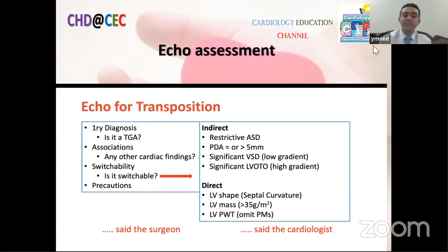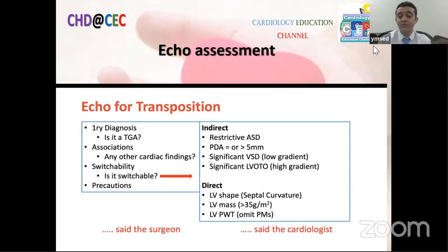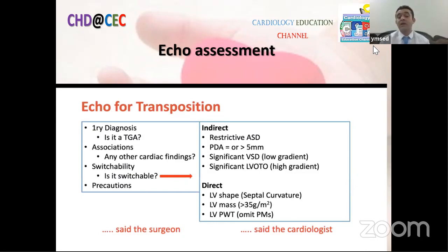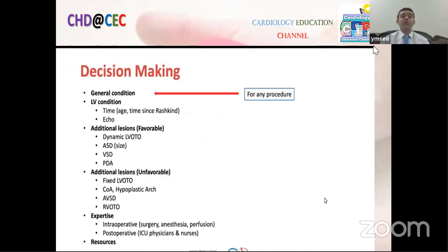If the septum bows toward the left ventricle, the LV is beginning to collapse and cannot maintain systemic circulation. Other criteria for switchability include LV mass — most literature agrees more than 35 g/m² is adequate for maintaining systemic circulation and favorable arterial switch operation — and posterior wall thickness measured after omitting the papillary muscle. These three parameters are critical for surgical decision-making.